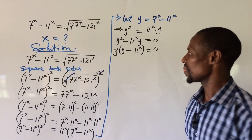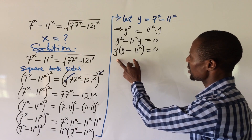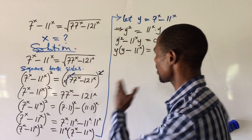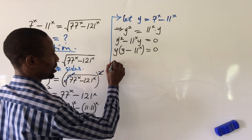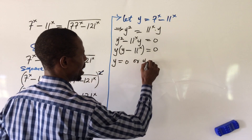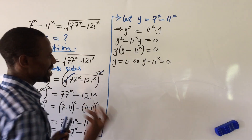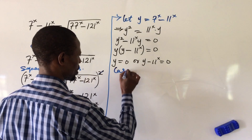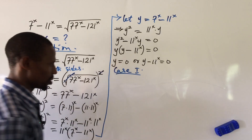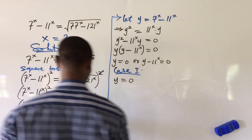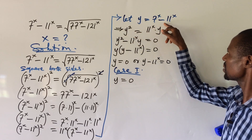This is the special approach I mentioned. By the zero product rule, whenever we have an expression equal to zero, we equate each factor to zero. So we take Case 1: y equals zero, and Case 2: y minus 11 to the power of x equals zero.